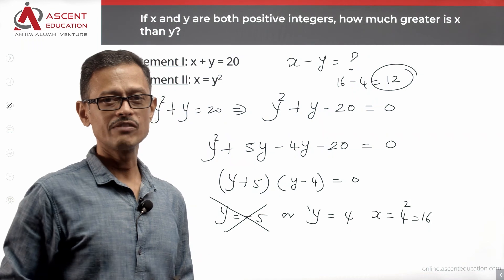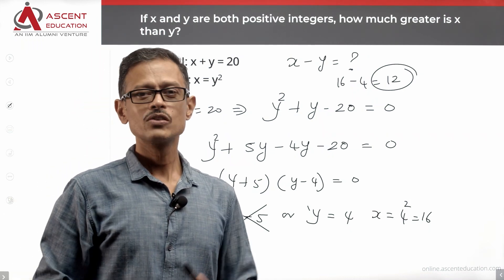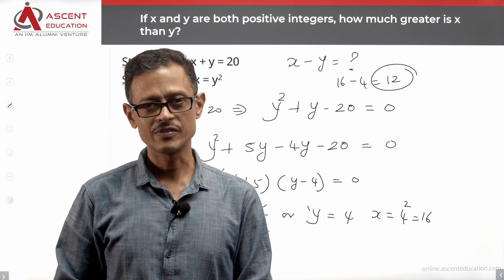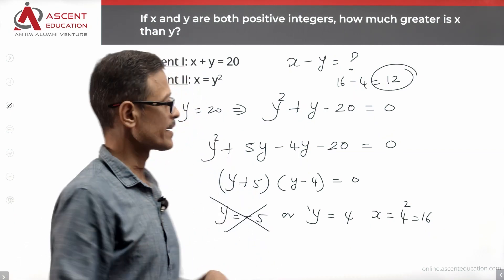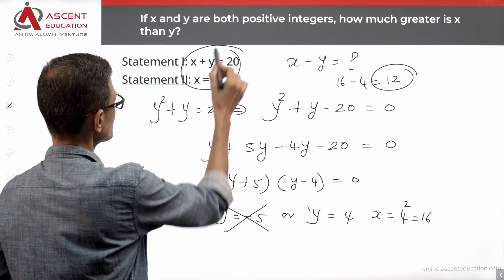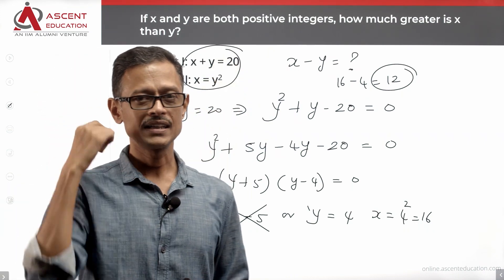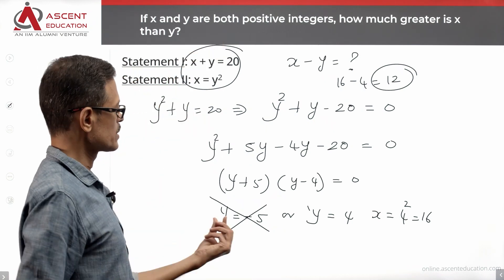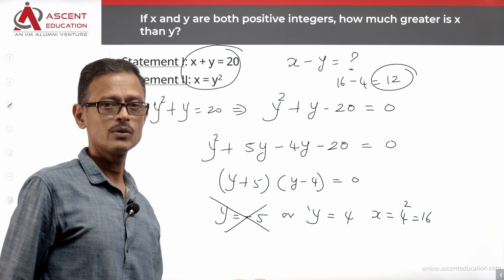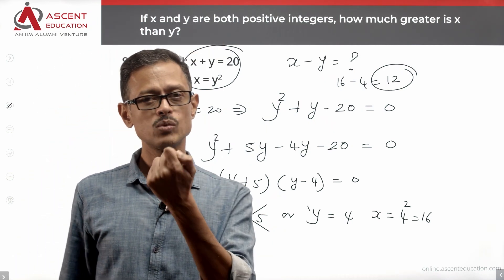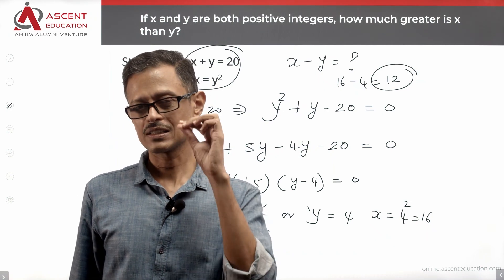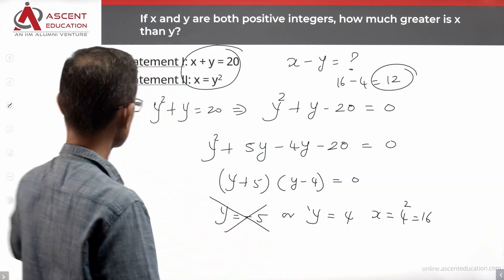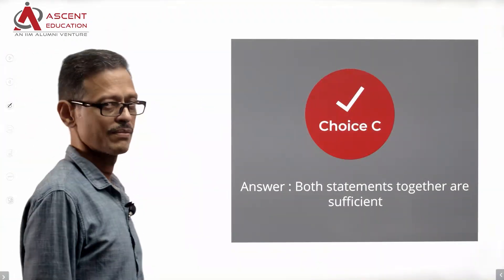We get a single unique value by combining the two statements. One explanation: two equations and two variables quite often give a unique answer — but be careful about the positive integer constraint, which eliminated y = minus 5. Once you account for that, the statements together are sufficient. Choice C is the answer to this question.